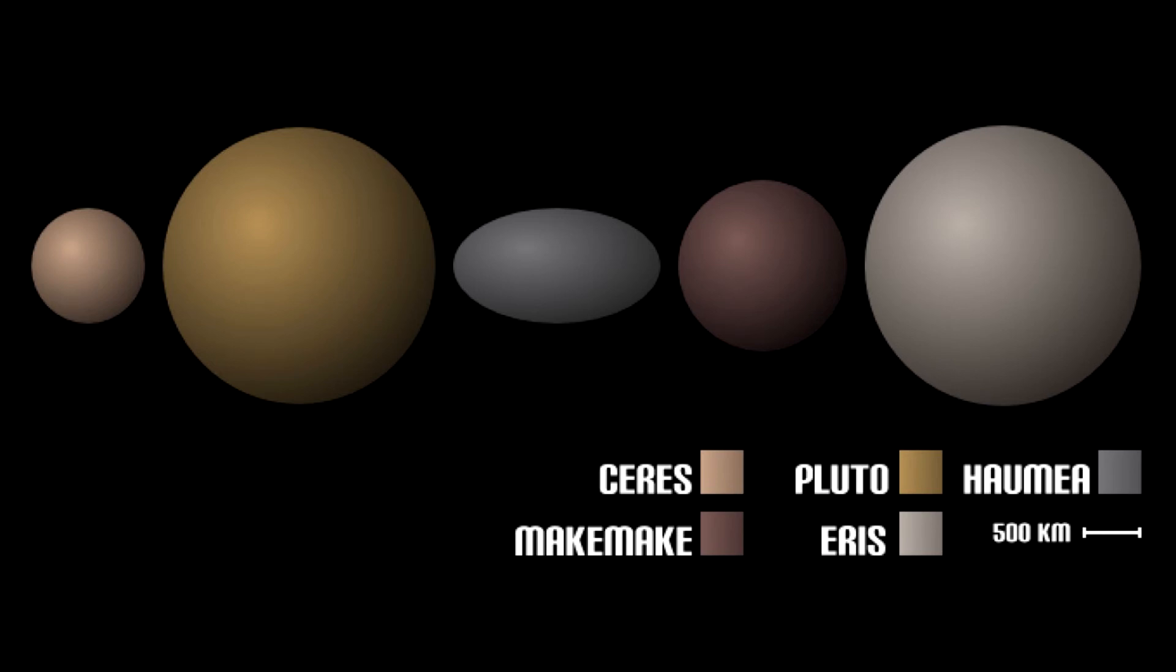Four of these planets are in Kuiper belt. Ceres being the closest planet to sun, while Eris being the furthest one.